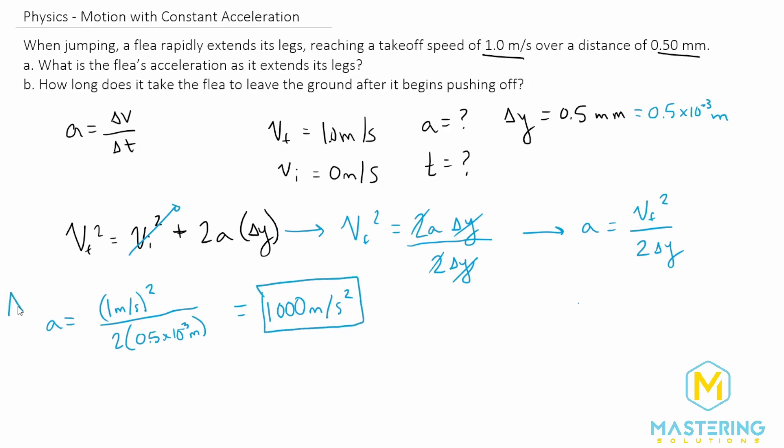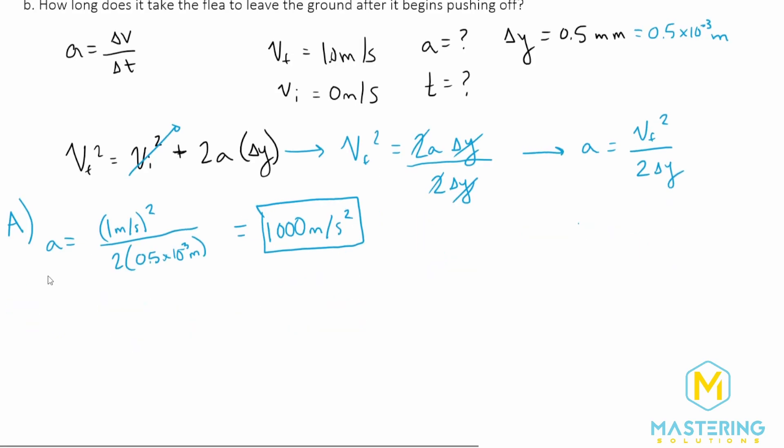So now let's move on to part b. And they say how long does it take the flea to leave the ground after it begins pushing off. So now we need to look back to the kinematic equations again and find one that has acceleration, velocity, and time. And the one that we'll be using for that, let's change colors here. So we have part b is the v final is equal to v initial and then we'll have plus acceleration times time.